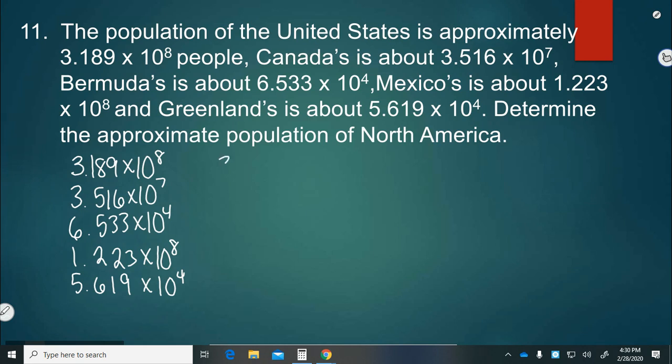So our largest power of 10 is 8. Which means we need to rewrite the others. So I'm going to bring over anything with an 8 and rewrite anything that doesn't have an 8. So this one stays. This 10 to the 7th needs to be changed to 10 to the 8th. So I need to decrease the place value by 1. So that's 0.3516. I'm going to be very careful as to where I write these so that my decimals line up. Then the 4th needs to be changed to 10 to the 8th as well. Which means my place value has to go back 4 places. So it's going to be 0.0006533.